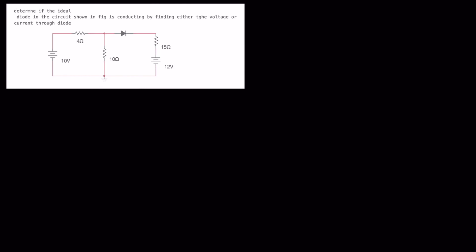Hello friends, today we'll solve one more basic problem on diode circuits. The given diode is an ideal diode and we have to calculate whether it is conducting or not. If it is conducting, what is the current flowing through the diode? Otherwise, what is the voltage drop across the diode?